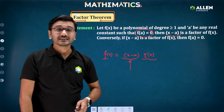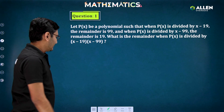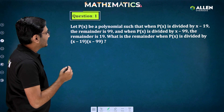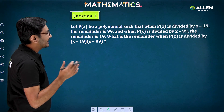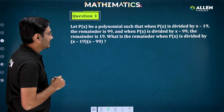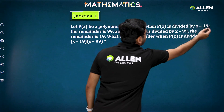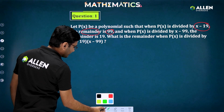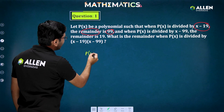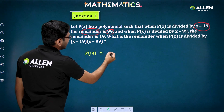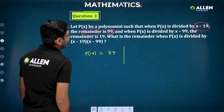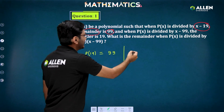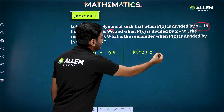Now let's see questions based on the remainder theorem and factor theorem. The question is: p(x) is a polynomial such that when p(x) is divided by (x minus 19), the remainder is 99 — meaning p(19) = 99. When p(x) is divided by (x minus 99), the remainder is 19 — meaning p(99) = 19.